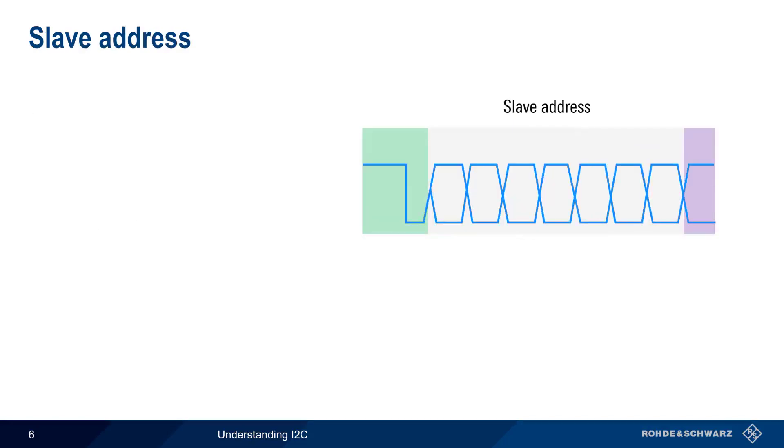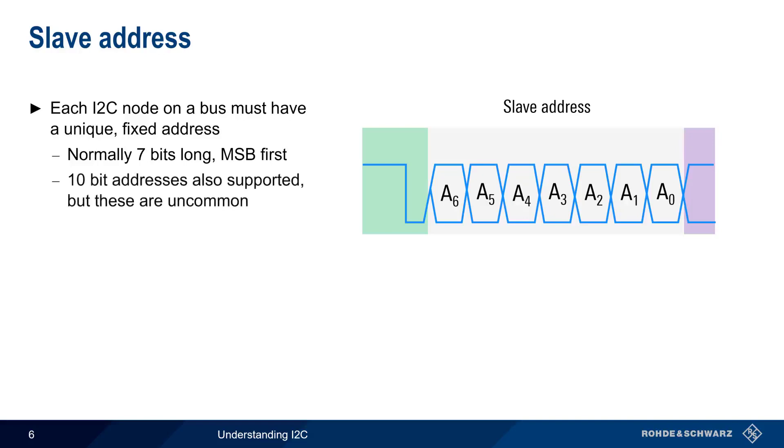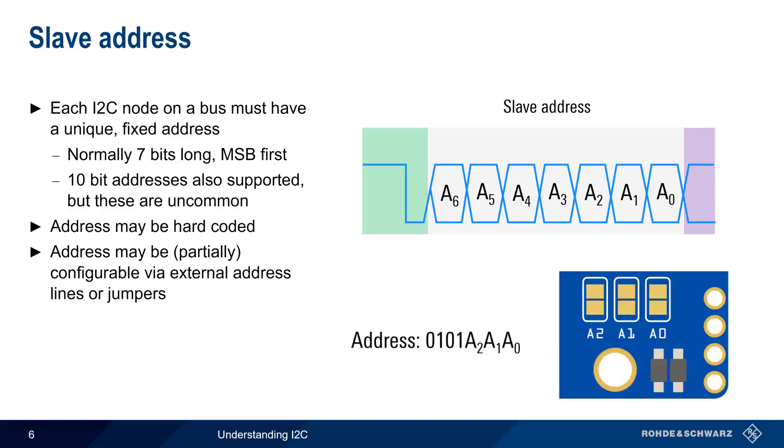Immediately following the start condition is the slave address, which is used to specify which node the master wants to communicate with. Each node on an I2C bus must have a unique, fixed address. These are normally 7 bits long, with the most significant bit first. I2C also supports 10-bit addresses, but these are uncommon. Addresses may be hard-coded for each device, but in many cases the address is partially configurable using external address lines or jumpers. For example, addresses for this board can be partially configured using three jumpers. In order to configure this address, both A2 and A0 would be jumpered, and A1 would be left open.